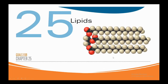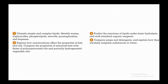Hello everyone. In this video I'll be talking about lipids, following the notes from the Lehninger Organic Chemistry textbook, chapter 25. What you will learn in this video is to classify simple and complex lipids, identify waxes, triglycerides, phospholipids, steroids, prostaglandins, and terpenes, and explain how unsaturations affect the properties of fats and oils.